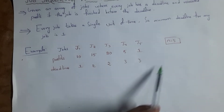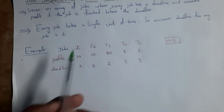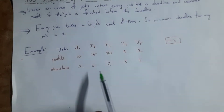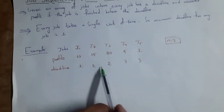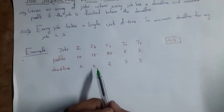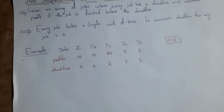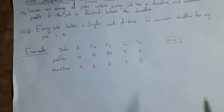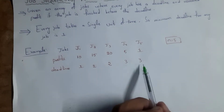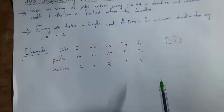All jobs take only one hour to complete. When J2 and J3 have deadline 2, it does not mean the job takes two hours — it means the job takes one hour but they have given two hours of time, so within two hours we need to complete the task. Similarly, J4 and J5 have deadline 3, meaning we have 3 hours but each job still takes only one hour.